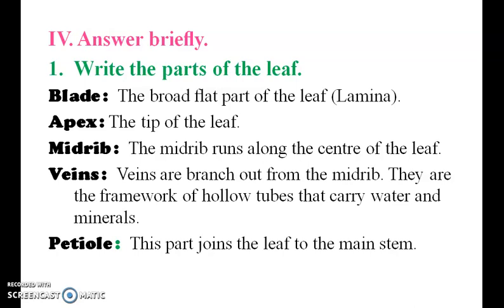Answer brief. Write the parts of the leaf. Blade: the broad, flat part of the leaf. Lamina. Apex: the tip of the leaf. Midrib: the midrib runs along the center of the leaf. Veins: veins are branched out from the midrib; they are the framework of tubes that carry water and minerals. Petiole: this part joins the leaf to the main stem.